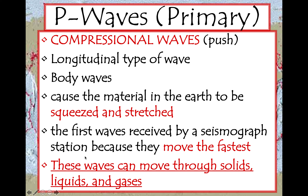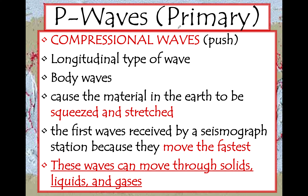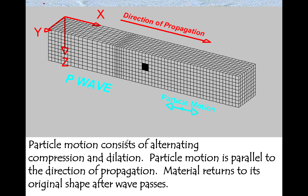P waves transfer energy by pushing on the material. They are a longitudinal type of wave. They travel through the earth's center, so they're called body waves, and they cause the material in the earth to be squeezed and stretched. They are the first waves to be received by a seismograph station because they move the fastest. These waves can move through solids, liquids, and gases — any of the three phases of matter.